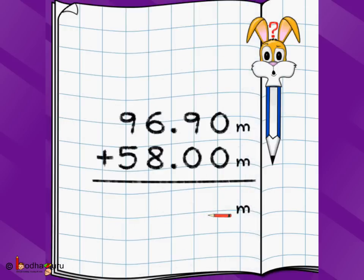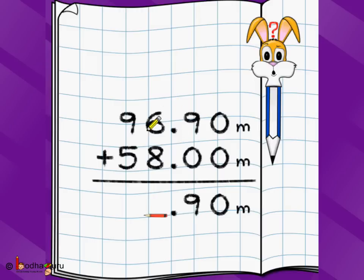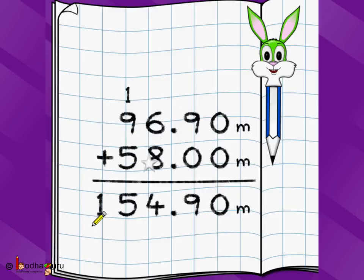Let's take one last problem with a bigger number: 96.90 meters plus 58.00 meters. Going fast — 0 plus 0 is 0, 9 plus 0 is 9, 6 plus 8 is 14 so we carry 1, 9 plus 5 is 14 plus the carryover is 15. The answer is 154.90 meters. That's all for today, children. Bye!